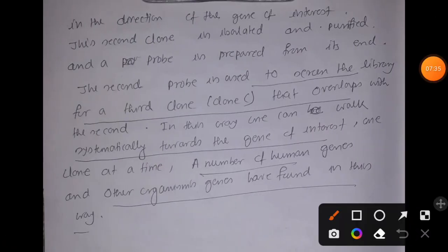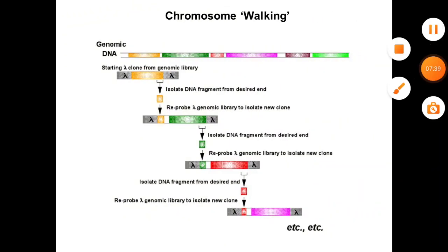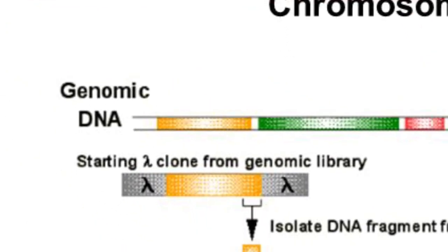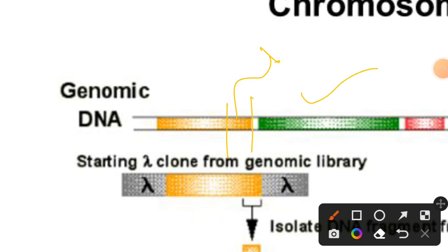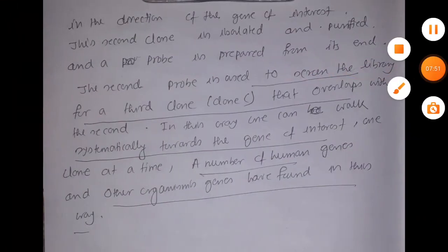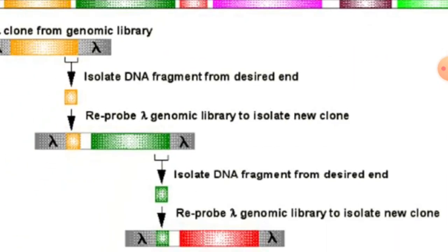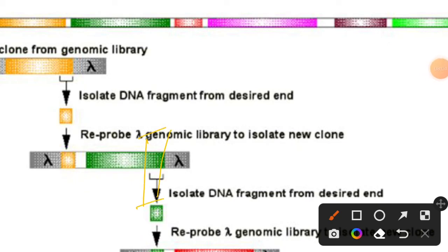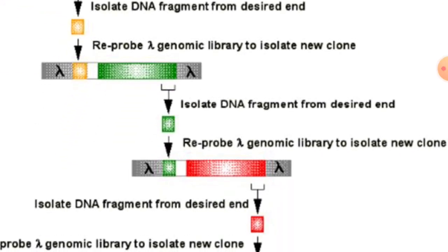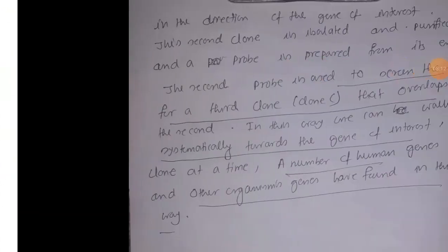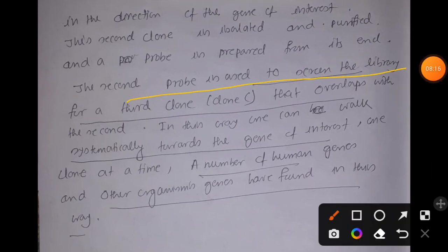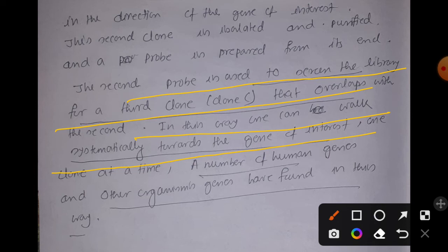The second clone extends in the direction of the gene of interest. This second clone is isolated and purified, and a probe is prepared from its end. We then use that second probe to find out the next clone — the second probe screens the library for a third clone that overlaps with the second. In this way we work systematically towards the gene of interest, one clone at a time. This is the procedure by which a number of human genome and other organisms' genes were found in that era.